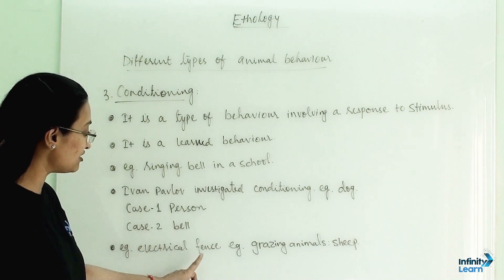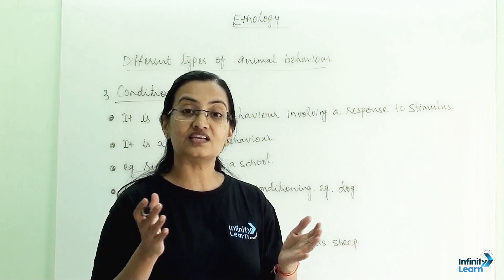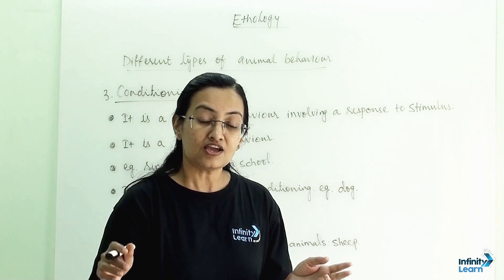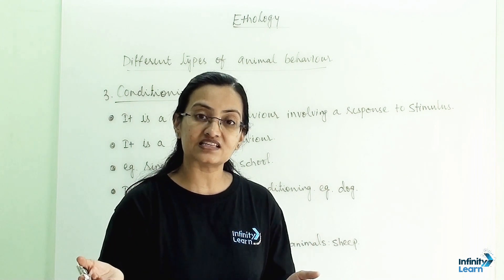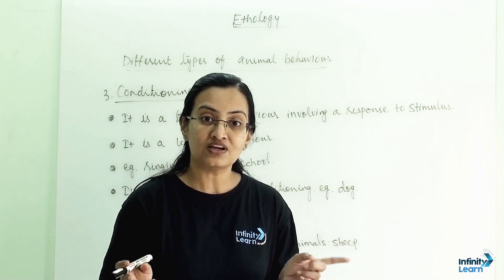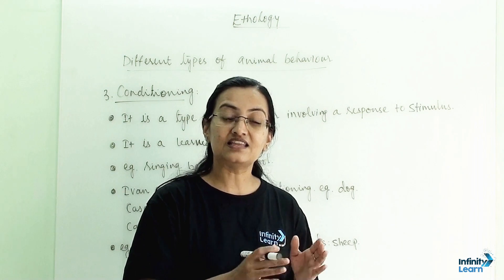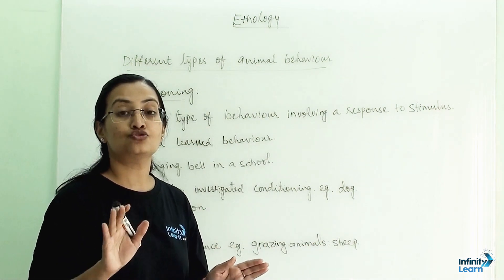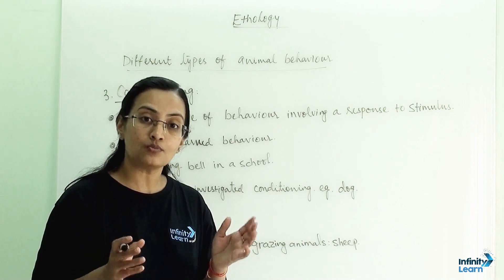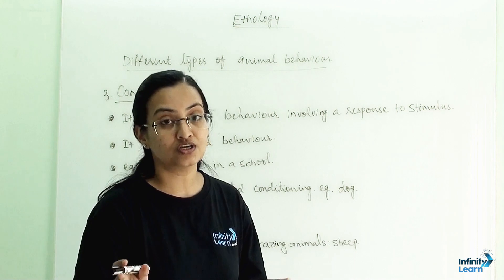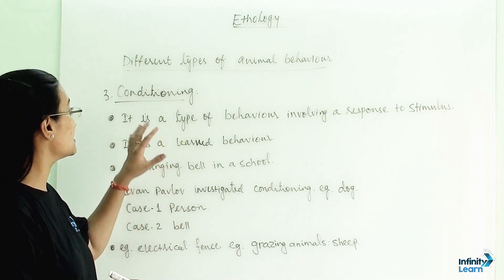Another example is the electric fence for grazing animals or sheep. When a sheep receives an unpleasant electrical shock even once, it will stay away from the fence in the future — even when the electricity is off. They have learned from past experience that this is unpleasant and could harm them. So even when no electricity is passing, they will not touch the fence. This kind of behavior, learned through experience, is known as conditioning behavior.